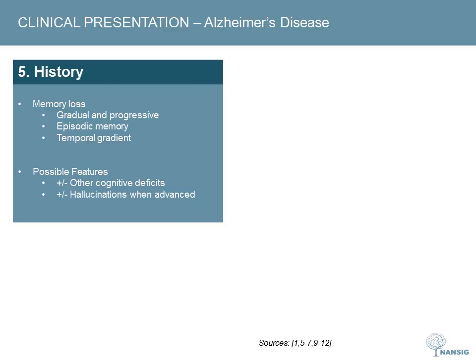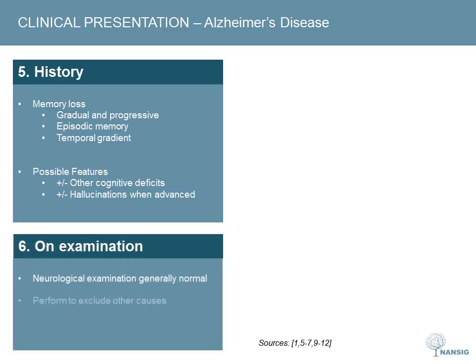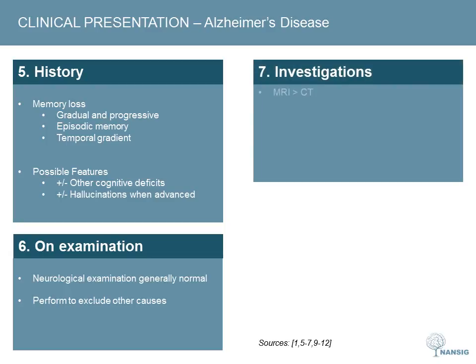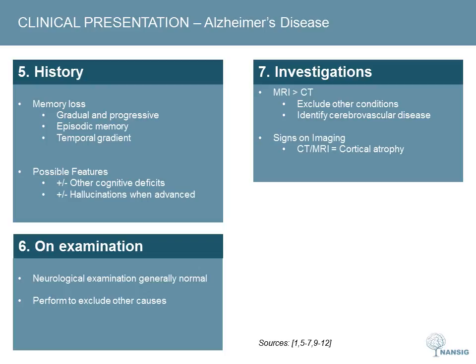There are no specific signs for Alzheimer's disease on examination. A normal neurological examination helps to exclude other causes. NICE guidelines support neuroimaging — MRI should be performed to rule out alternative causes and identify cerebrovascular disease, with CT as an acceptable alternative. Look for cortical atrophy on imaging, seen through changes such as enlargement of the sulci. On MRI, look for focal atrophy of the medial temporal lobe, which is more specific and can differentiate Alzheimer's from dementia with Lewy bodies or vascular dementia.